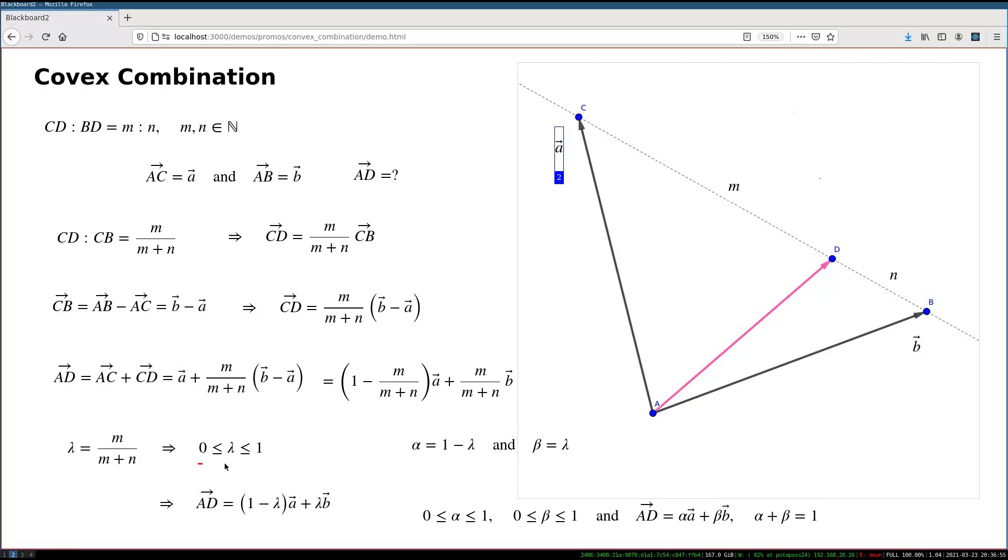For all other values between 0 and 1 strictly, or between 0 and 1 proper, D will be somewhere between the C and B points.